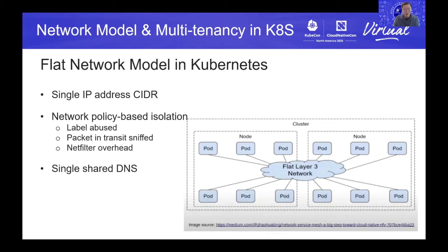Additionally, some network policies are implemented based on a Unix feature called NetFilter, which uses IP table rules. In reality, IP table rules can get huge and cause overhead, increasing network latency. It's not a security issue, but it's not a desirable solution.